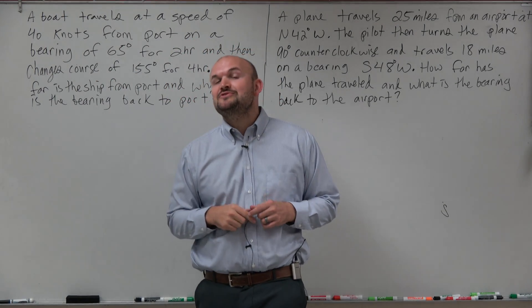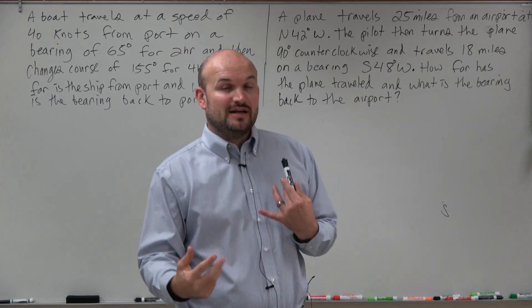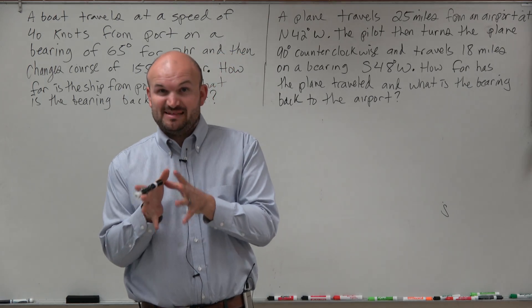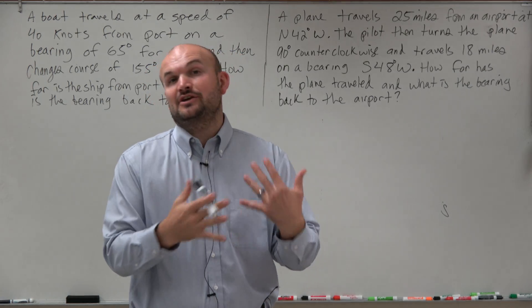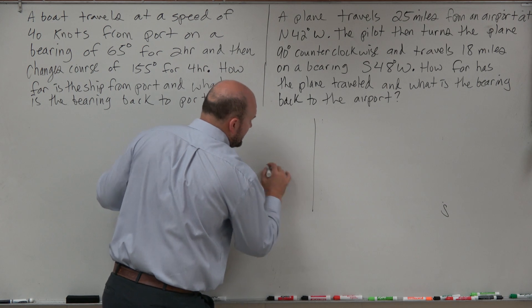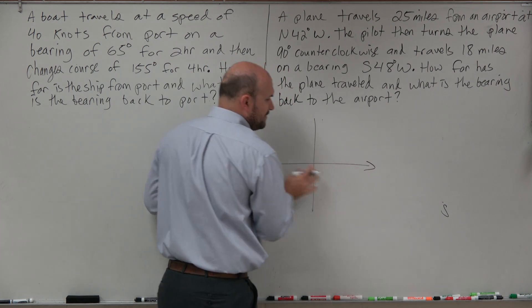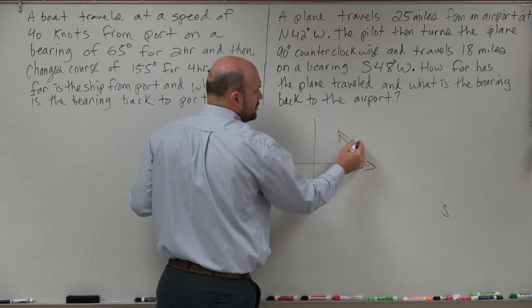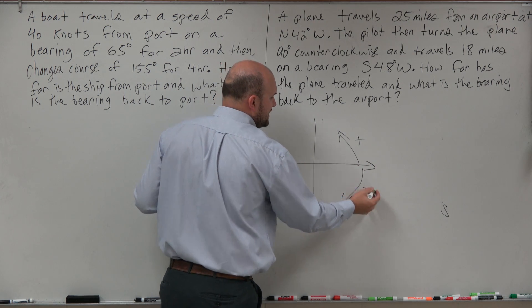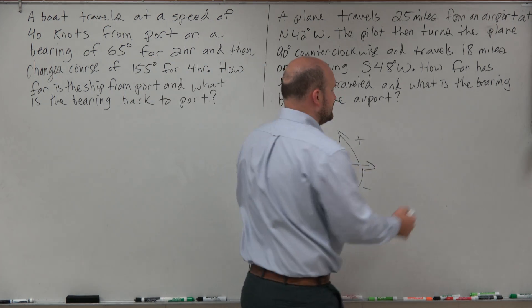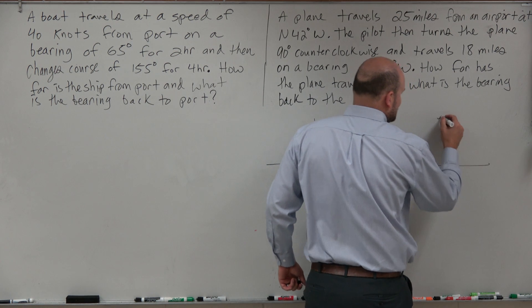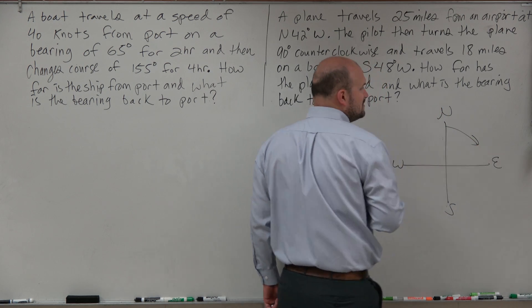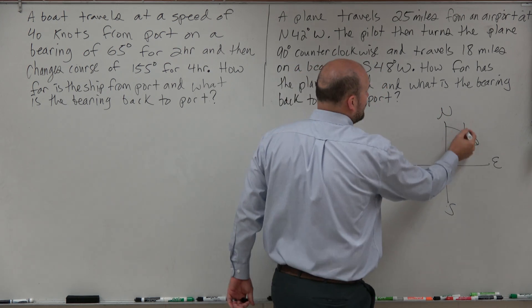Welcome. What I'd like to do is show you how to solve word problems with trigonometry using bearings. The main important thing different with bearings is there are going to be angles that are a little bit different in the standard definition of an angle. In standard form, the initial side was in the positive x-axis, rotating counterclockwise was positive, and clockwise was negative. When dealing with bearings, we have a compass heading — north, east, south, west — and we start from due north, where angles rotated clockwise are positive.